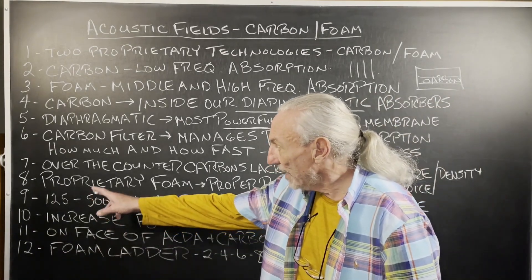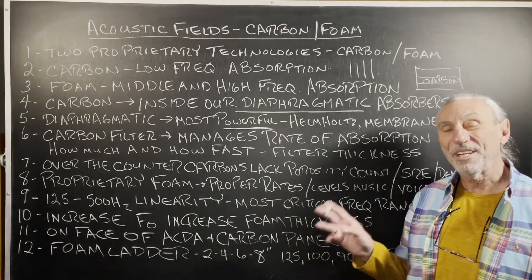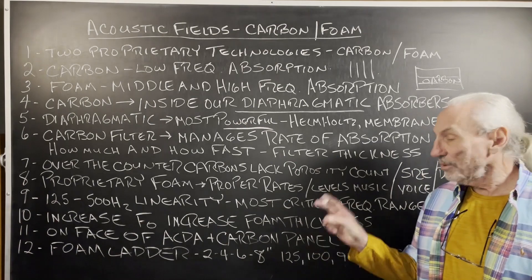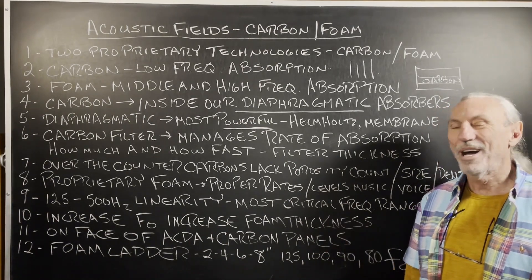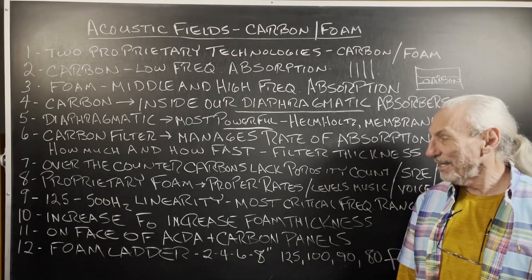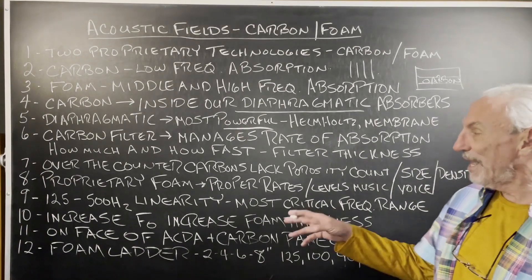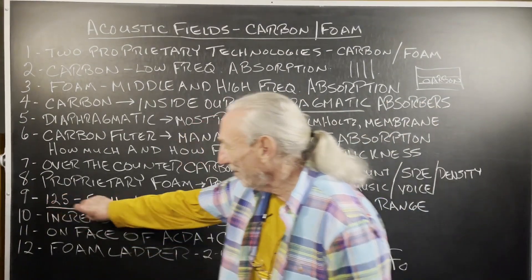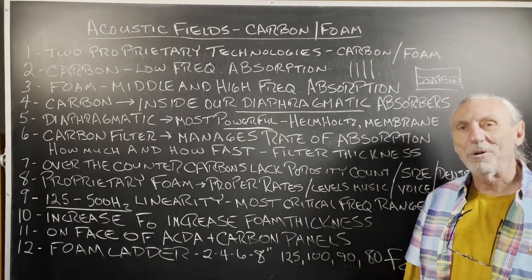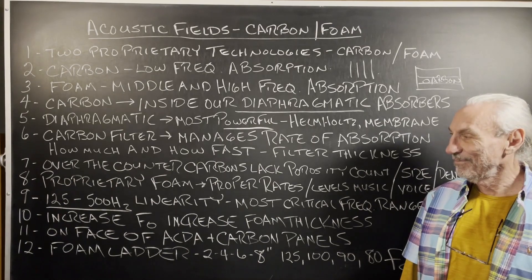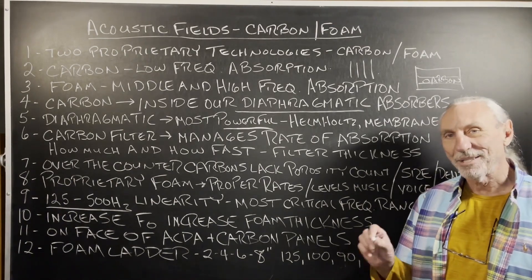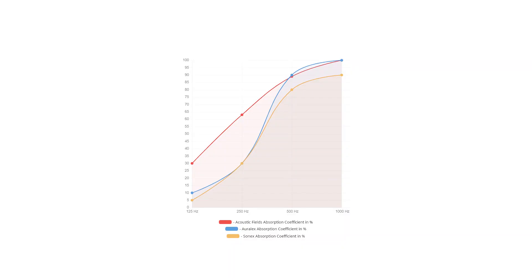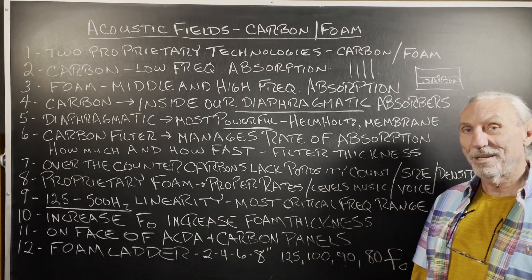We have our foam technology, which is wonderful from 125 to 500 Hz — and that's the most critical frequency range for music and voice. I measured over 100 corporate boardrooms back in the 80s and 90s when I was developing my foam technology, and we found that critical range from 125 to 500 Hz you had to get right. Anybody can design a foam that absorbs above 500 Hz, but you've got to get that 125 to 500 right. You can see on our foam graph how smooth it is compared to the competition. Your ear hears those bottom two dips in competing products — not ours.